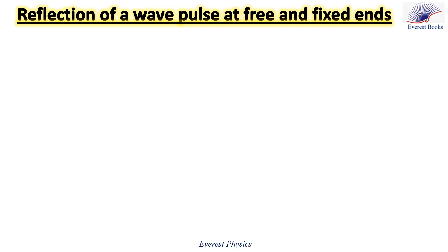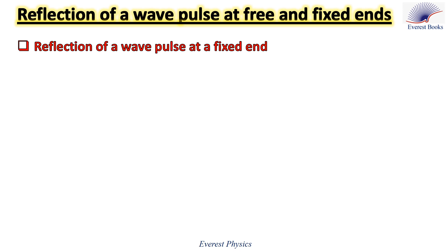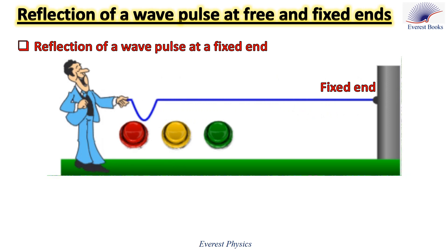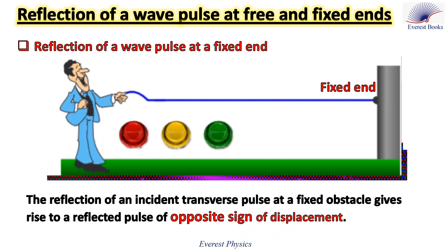Some waves undergo reflection when they encounter the end of the medium. Let's study reflection of a wave pulse at a fixed end. The man holds a rope whose right end is attached to a fixed object. The man moves his hand up and down, creating a wave pulse traveling along the rope. The pulse undergoes reflection as it reaches the fixed end. The pulse becomes inverted upon reflecting off the fixed end. The reflection of an incident transverse pulse at a fixed obstacle gives rise to a reflected pulse of opposite sign of displacement.